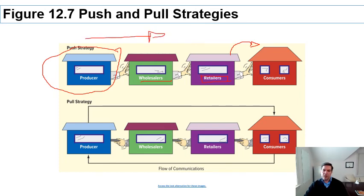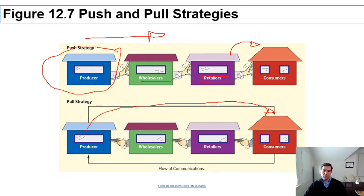The push comes through the channel to the consumer. Pull strategy is the opposite — the producer talks directly to the consumer, perhaps through advertising, about how great the product is. Because of that, the consumer goes to the retailer and pulls the product from the shelf. If the retailer doesn't carry it, the consumer asks the manager to stock it because they heard the advertising. These two strategies are not mutually exclusive — you can use both, but conceptually they function very differently.